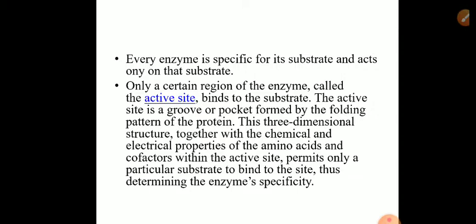The active site is a cavity or a groove or a pocket which is formed by folding of the protein chains. This three-dimensional structure together with the chemical and electrical properties of the amino acids and co-factor within the active site permit only a particular substrate to bind to it, thus it determines the enzyme specificity. Every enzyme is protein in nature and made up of amino acids. The amino acid chains are called polypeptide chains. They fold in a particular configuration when primary, secondary, and tertiary or quaternary structures stabilize the structure of a protein. In every enzyme there is a pocket or groove — the active site — formed due to the folding of the protein chains, and into this active site only one particular substrate can fit.